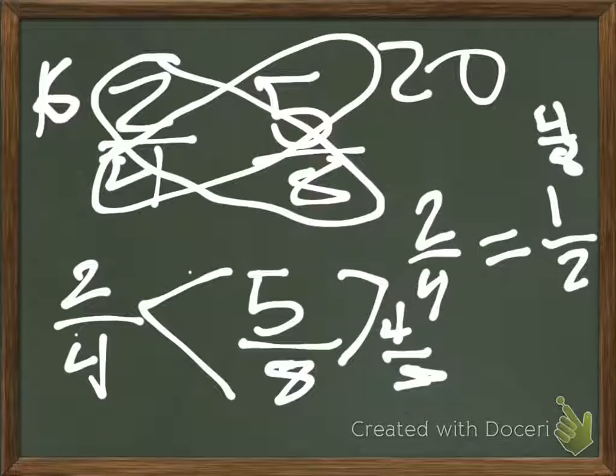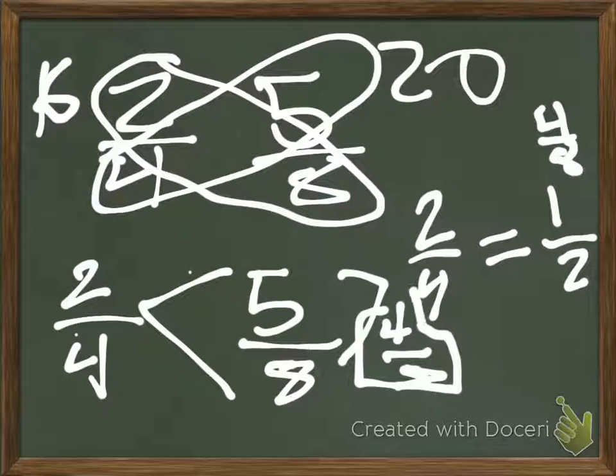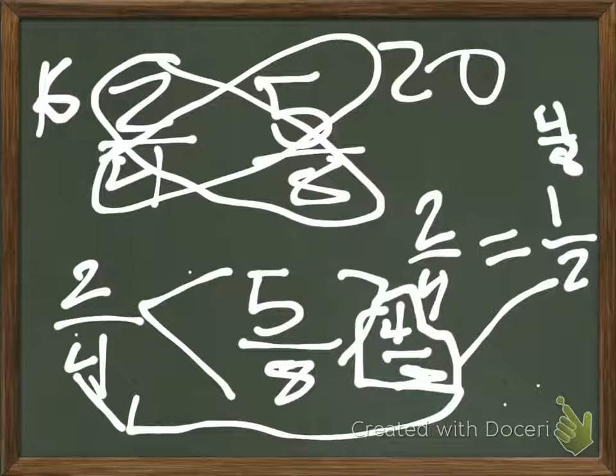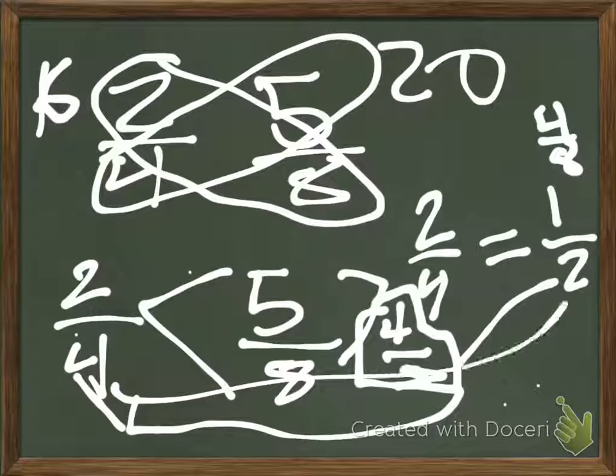And five eighths. If you do five eighths, so if you do four eighths and two fourths, it will be equivalent also. Because four eighths is a half and two fourths is a half.